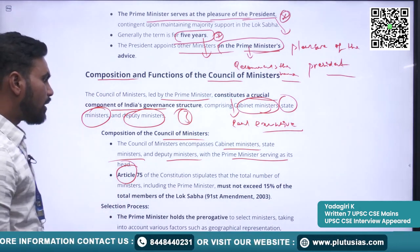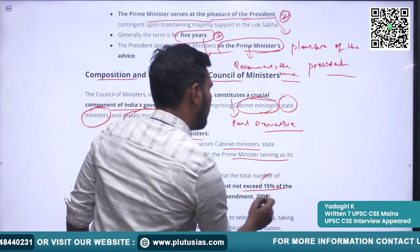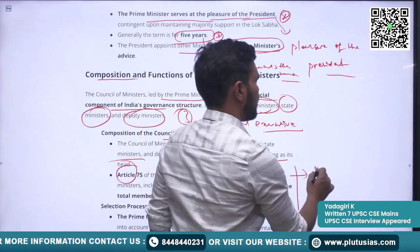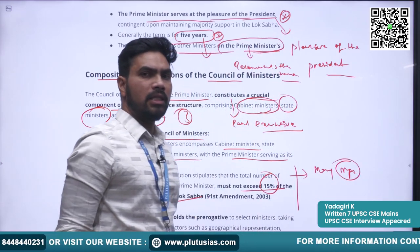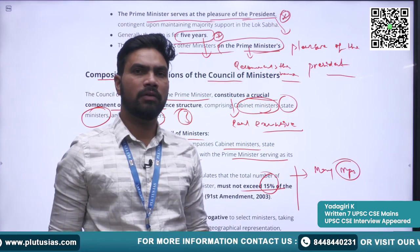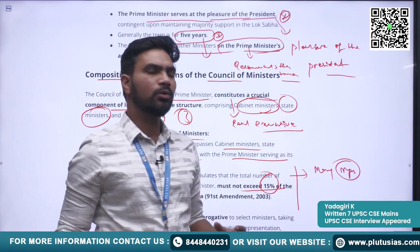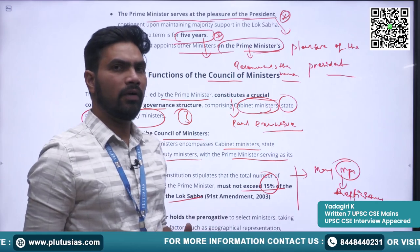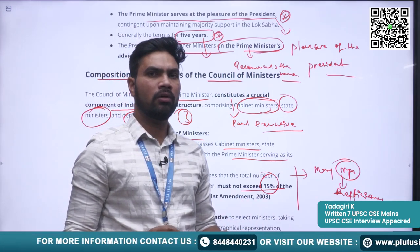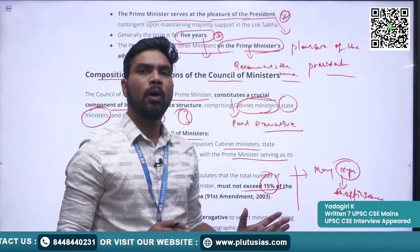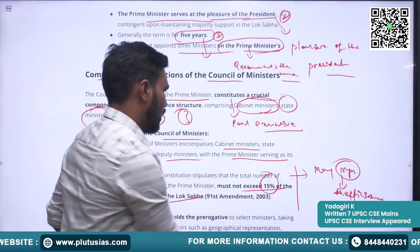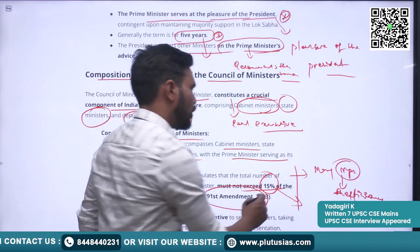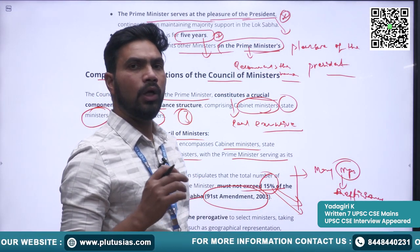Article 75 says the total number of ministers should not exceed 15% of the total members of the Lok Sabha. This was introduced because many MPs were being appointed as ministers to fulfill political demands, leading to inefficiency and politicization of governance. To avoid this, the 91st Amendment was made in 2003 prescribing a limit for the size of the Council of Ministers — it should not exceed 15% of the total membership of the Lok Sabha.